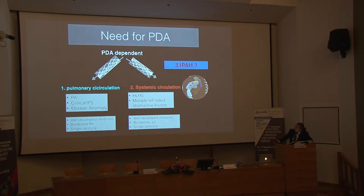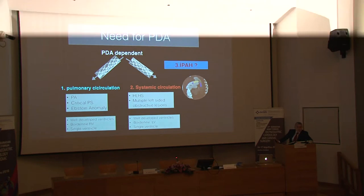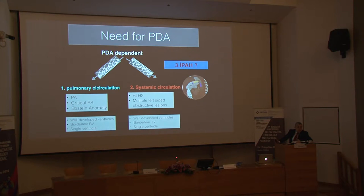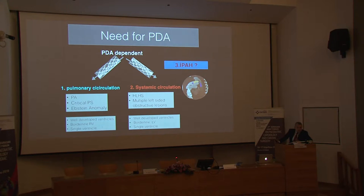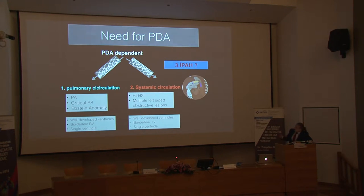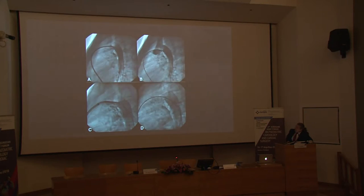There is a third indication where we may need the PDA open: idiopathic pulmonary arterial hypertension, which was discussed yesterday. In some of these patients, if you have a small PDA or a probe-patent PDA, it acts like a Potts shunt, and it's actually better for RV decompression compared to creating an atrial septal defect — though that's beyond today's scope.